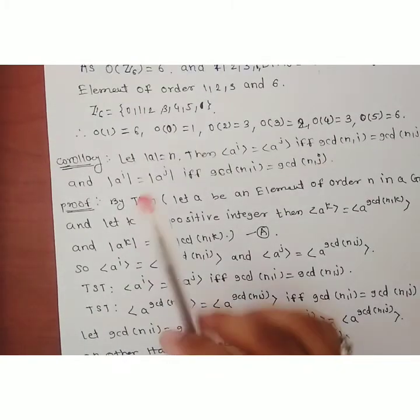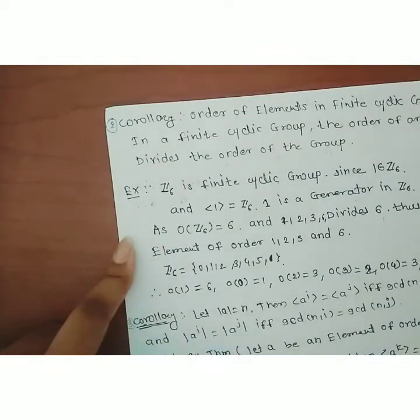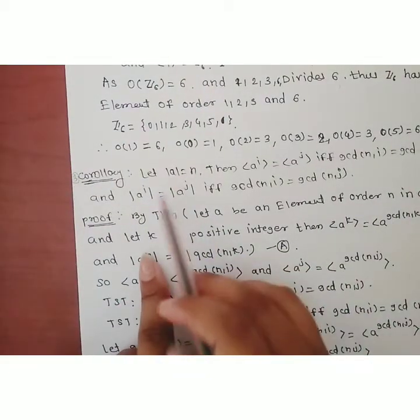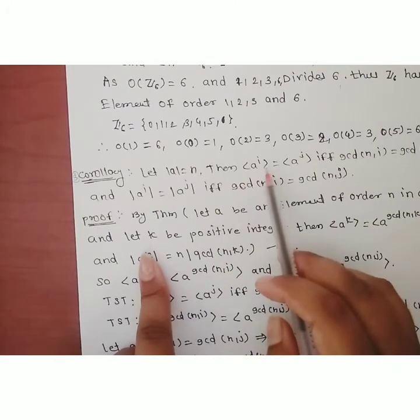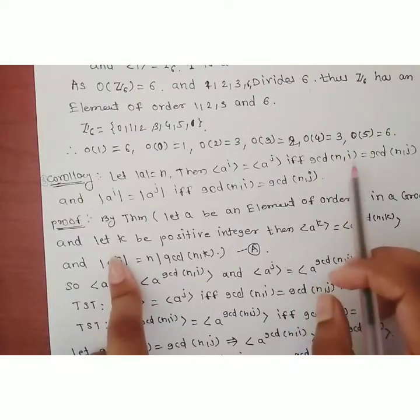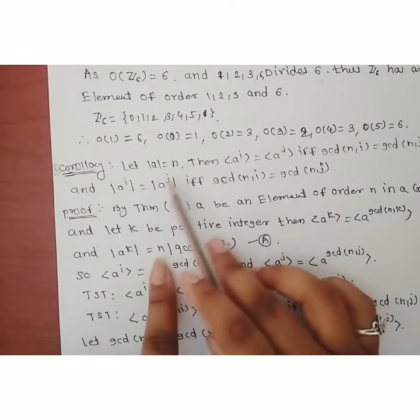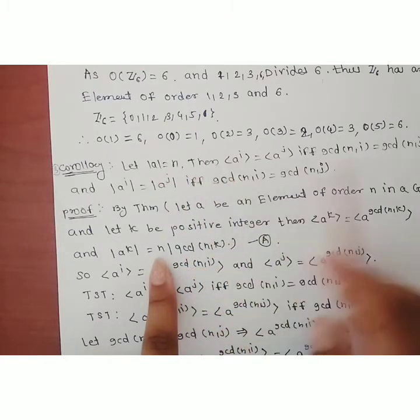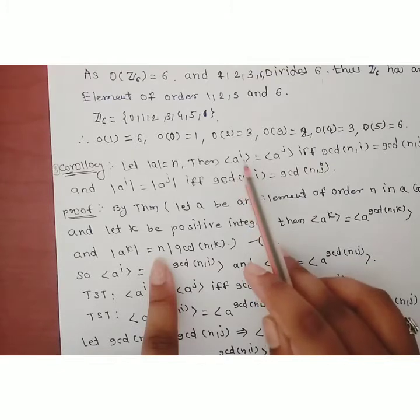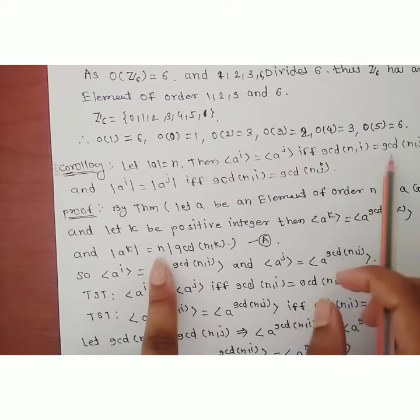Now the next corollary — Corollary 3. We covered one corollary in the last lecture, this is the second, and now the third. Corollary 3 states: let order of a equal n. Then ⟨a^i⟩ = ⟨a^j⟩ if and only if gcd(n, i) = gcd(n, j).